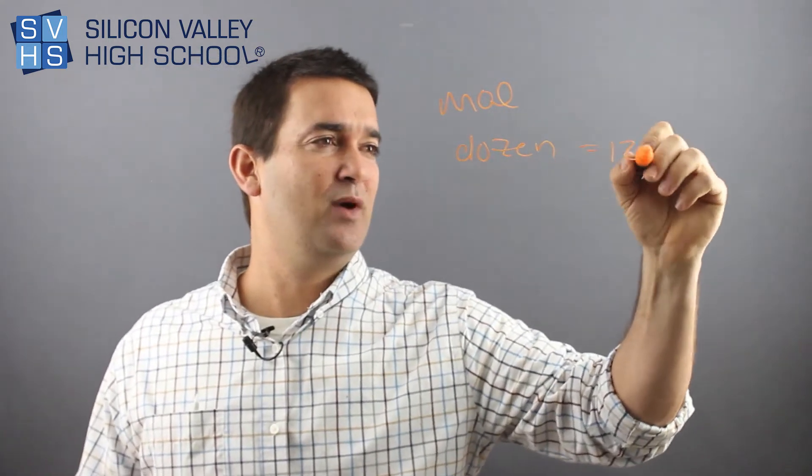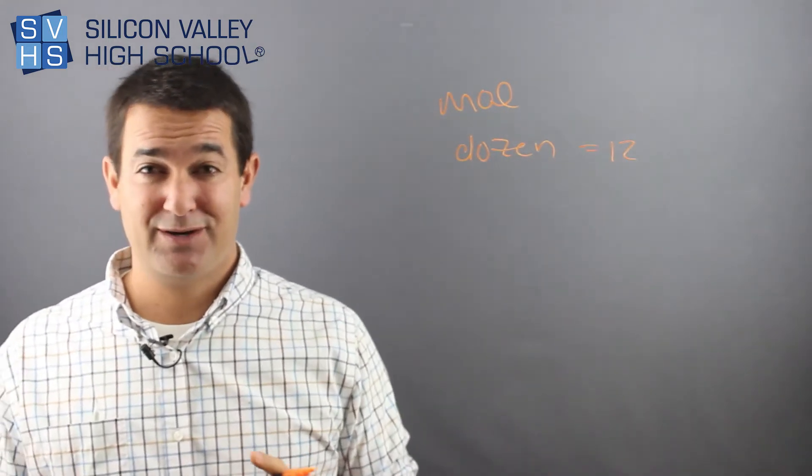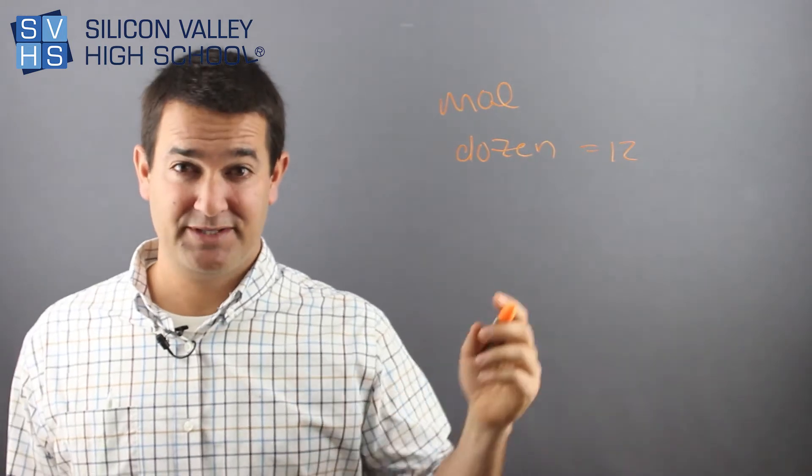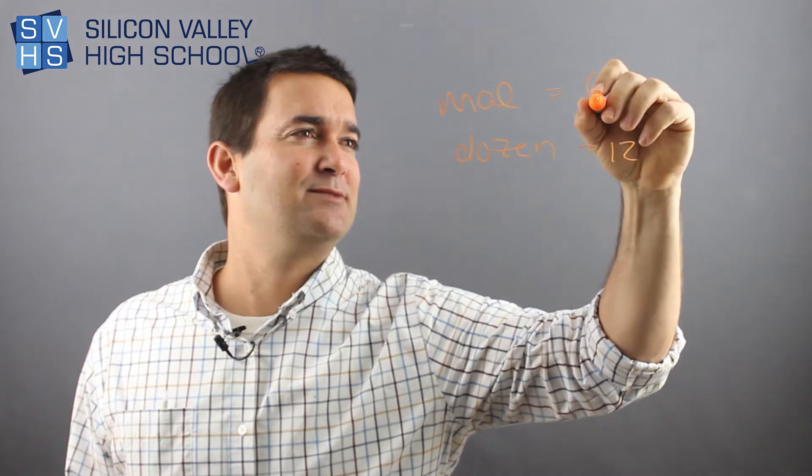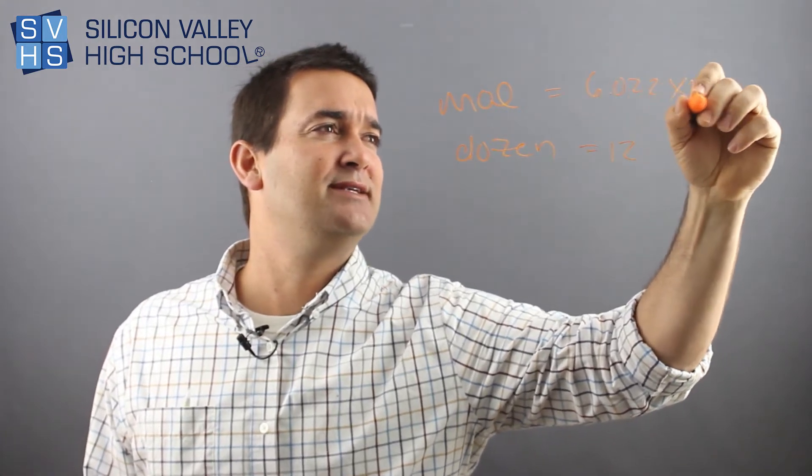Of course, you know, a dozen is just simply 12. A mole is a pretty trippy number. It's like this ginormous number that some guy, actually, I know his name, I'll tell you in a second. Anyway, he invented is 6.022 times 10 to the 23rd.